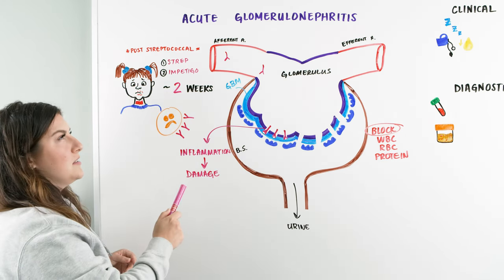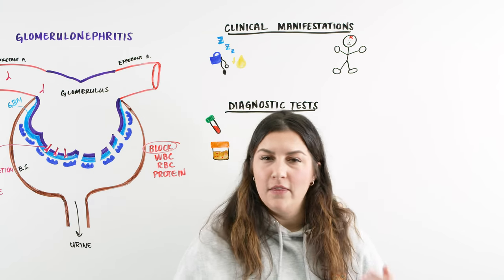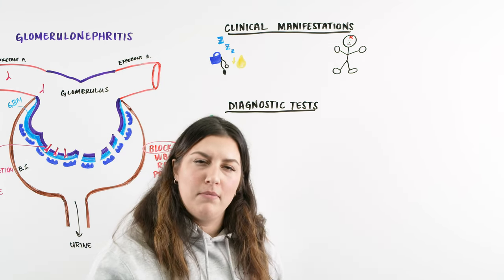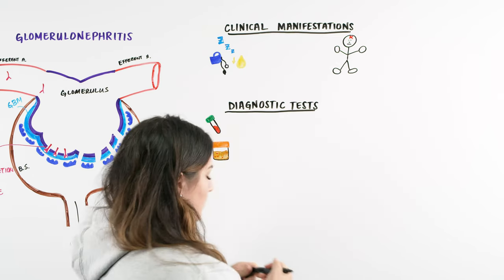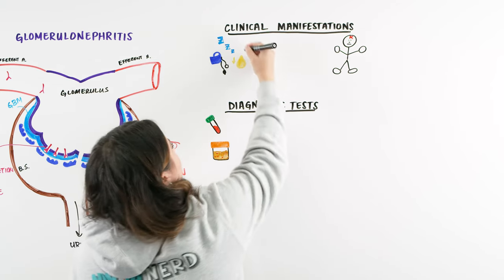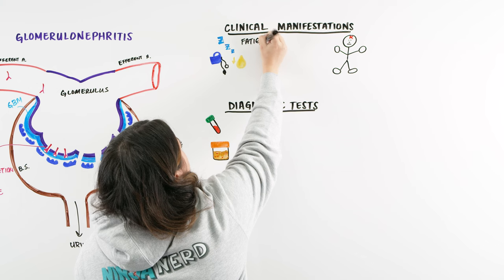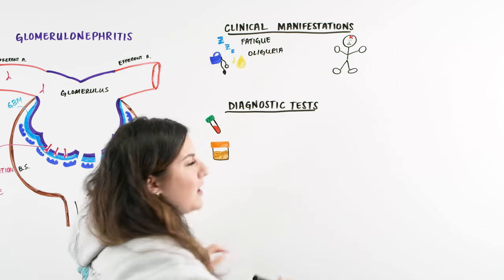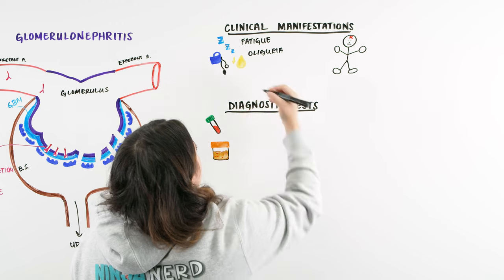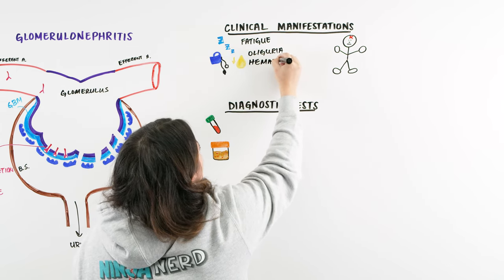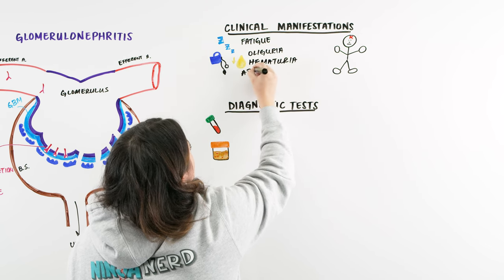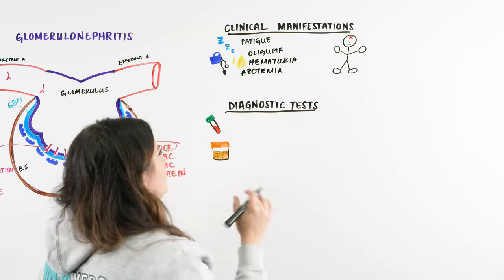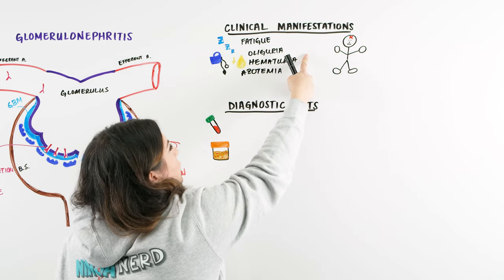What are the signs and symptoms of acute glomerulonephritis? A patient may say they haven't been feeling good and have been fatigued for the past couple of weeks. They're having trouble going to the bathroom — not peeing a lot — and noticing that the urine looks red or dark. As a nurse, we're checking off: this patient has oliguria, hematuria, and azotemia — decreased urine output, blood in the urine, and dark urine. We also take their vitals and might see an increase in blood pressure.